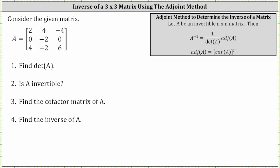Given matrix A, we're asked to find the determinant of A, then determine if A is invertible, then find the cofactor matrix of A, and finally find the inverse of A. Let's begin by finding the determinant.